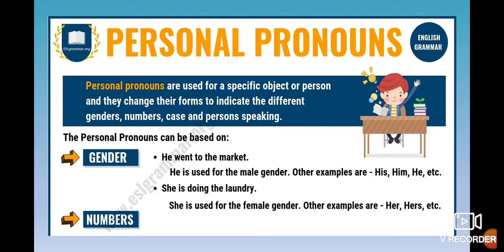We have two sentences as examples here. 'He went to the market.' 'He' is the pronoun — it's a personal pronoun, and in this case it's a subjective pronoun used for the male gender. Other examples are 'her' or 'hers.' If you notice, the gender is male or female — masculino o femenino. Numbers speak about quantity — whether this one is plural or singular. 'She' is singular — the third person singular.